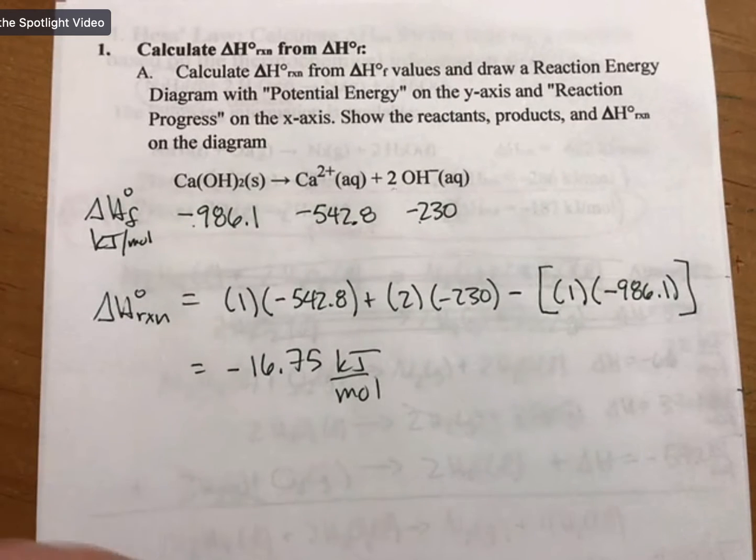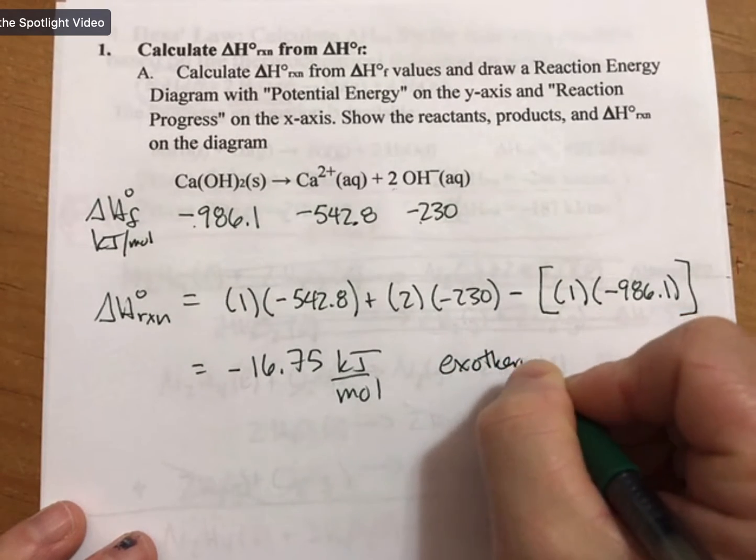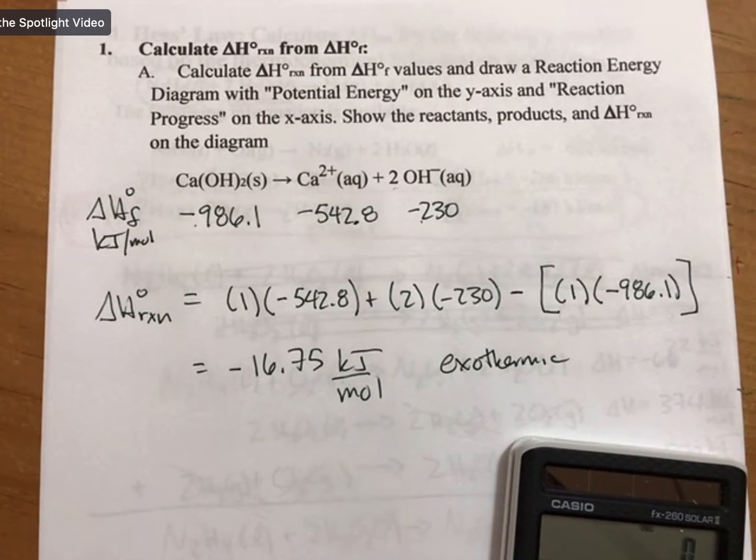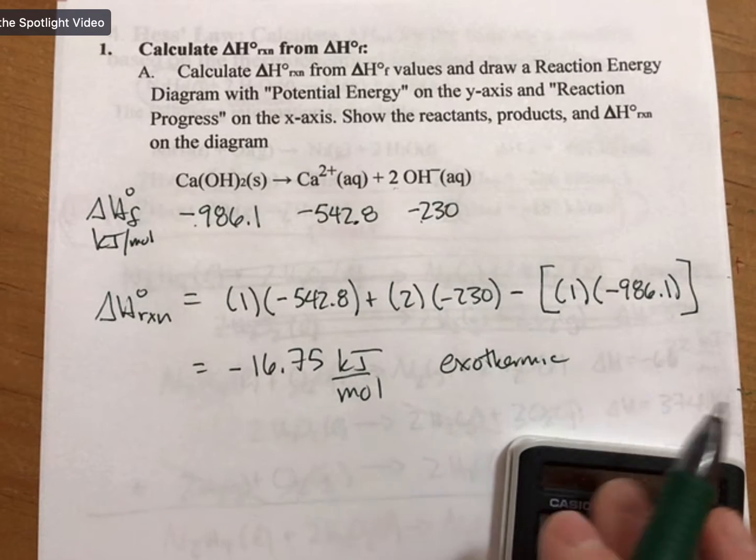Now this is exothermic. Let me recalculate: -542.8 plus two times -230 plus 986.1... yeah, I get -16.7.